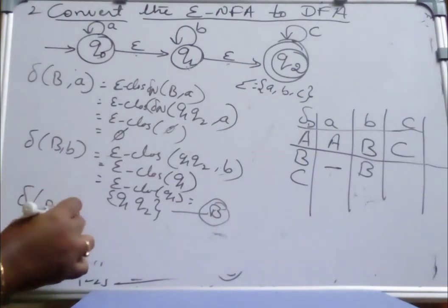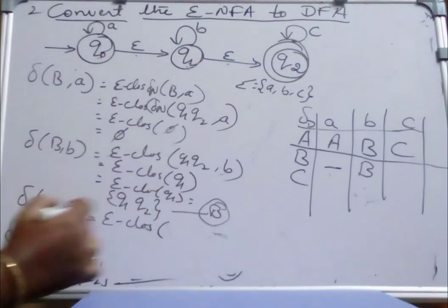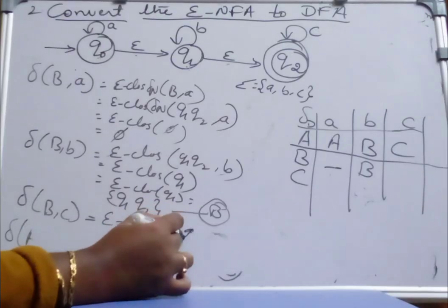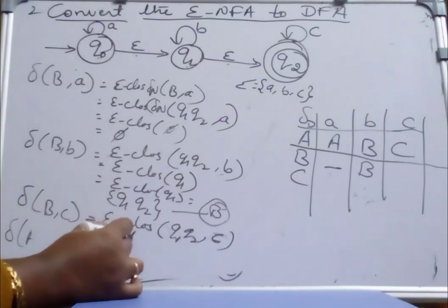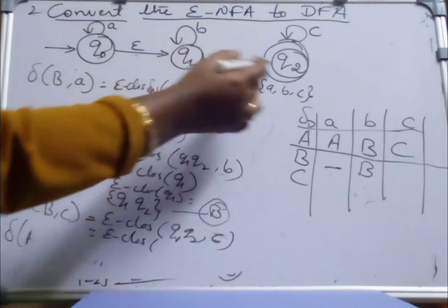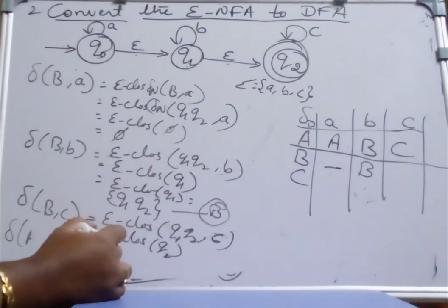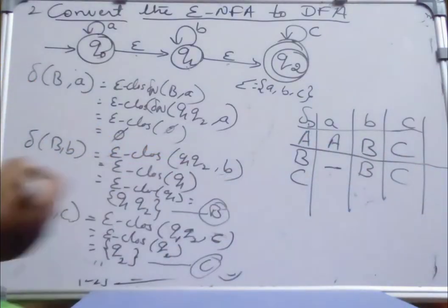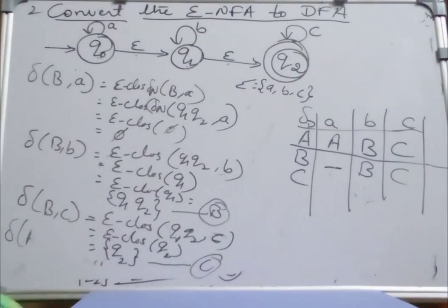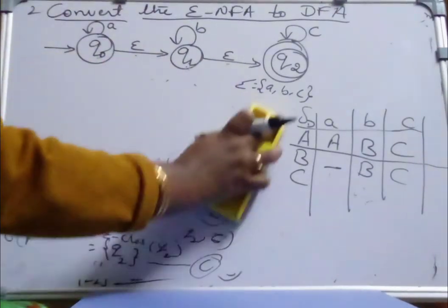Find transition of B on c. B on c equals Epsilon closure of {Q1, Q2} on c. Q1 on c we don't have a transition, but Q2 on c has a transition to Q2. Epsilon closure of Q2 is Q2 itself, which is the same as state C. So B on c is moving to C. We didn't get any new states — we already have B and C.